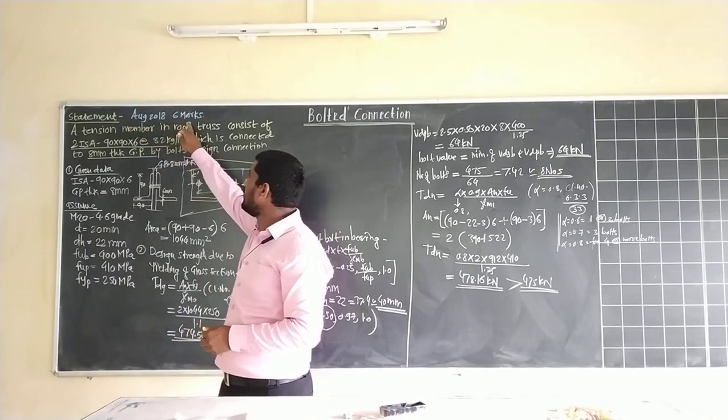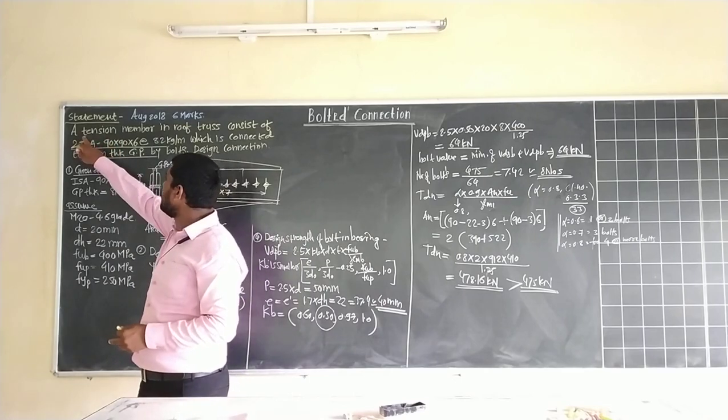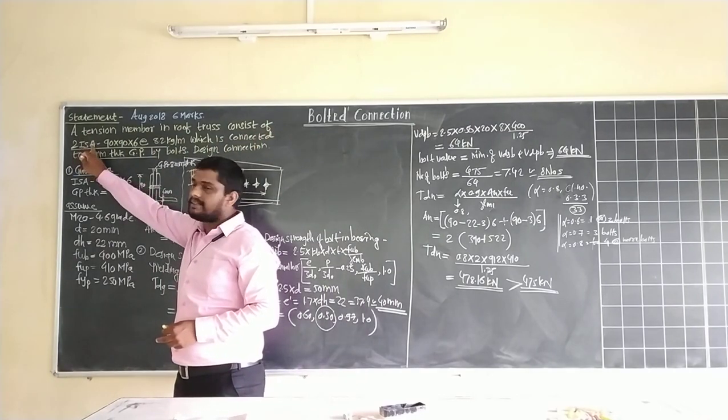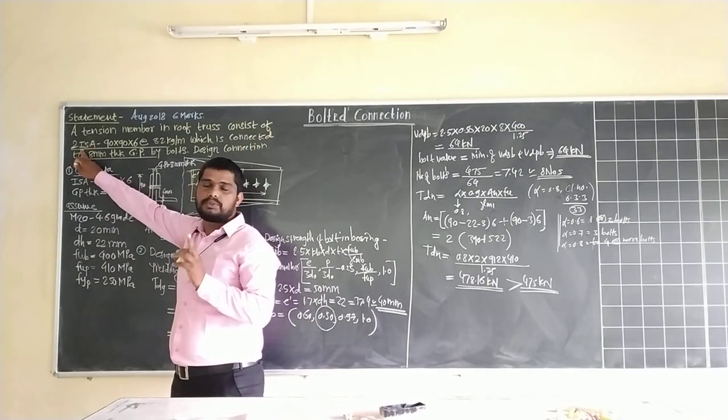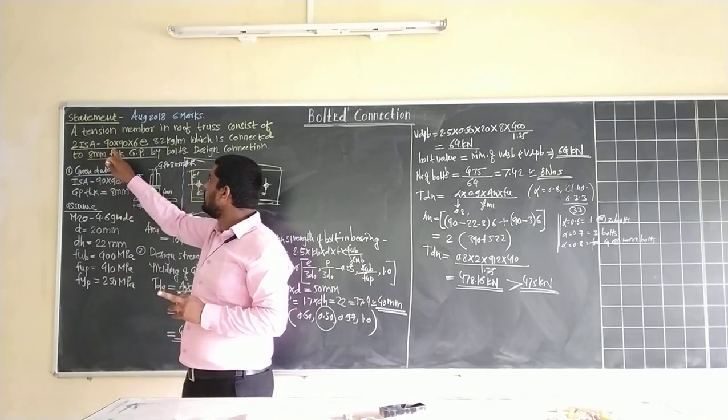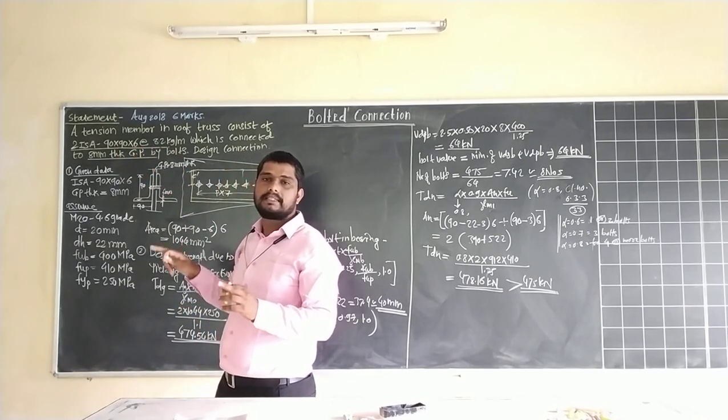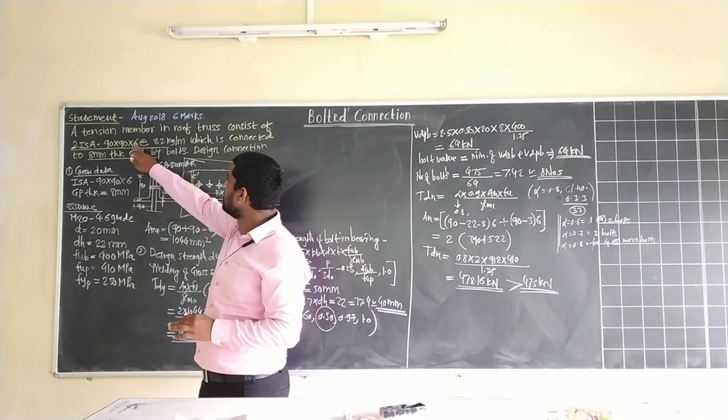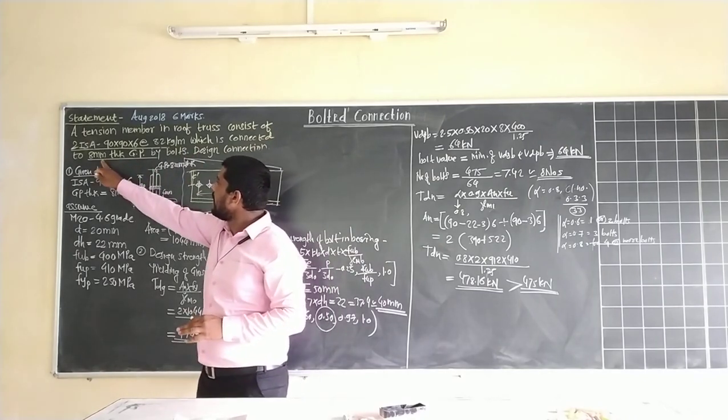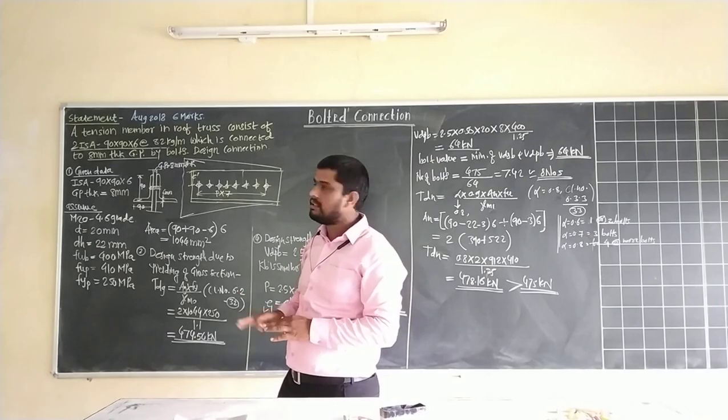Statement: A tension member in roof truss consists of 2 ISA (Indian Standard Angle) sections, 90 by 90 by 6 at 8.2 kg per meter, which is connected to 8 mm thickness gusset plate by bolt. Design the connection.